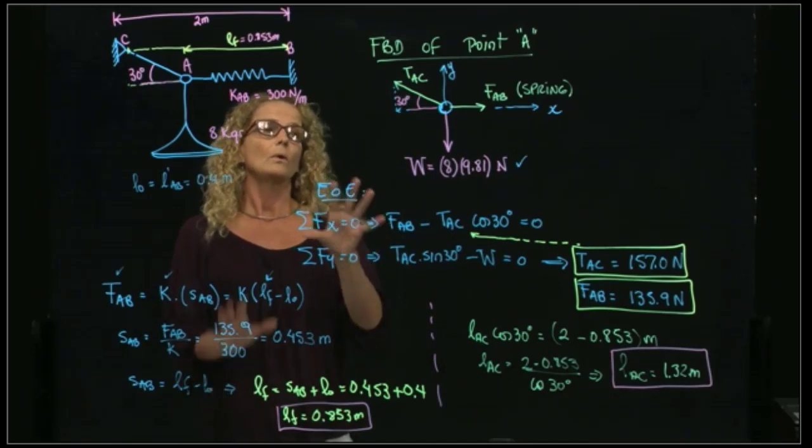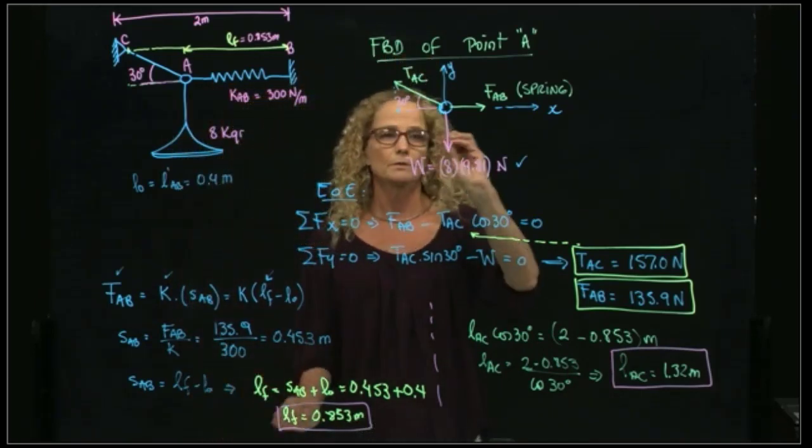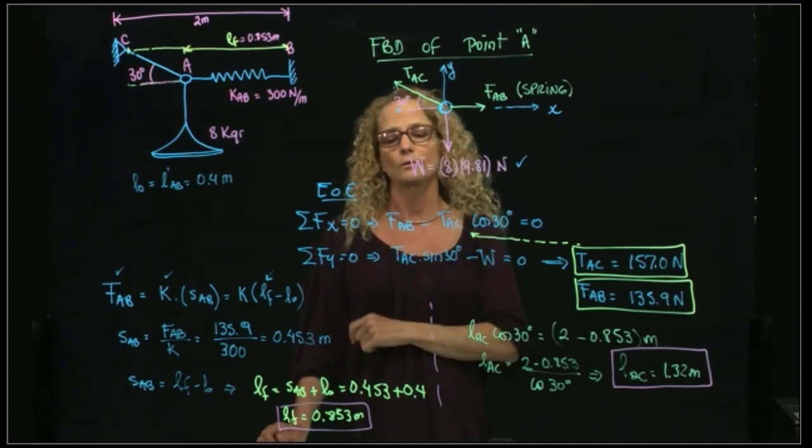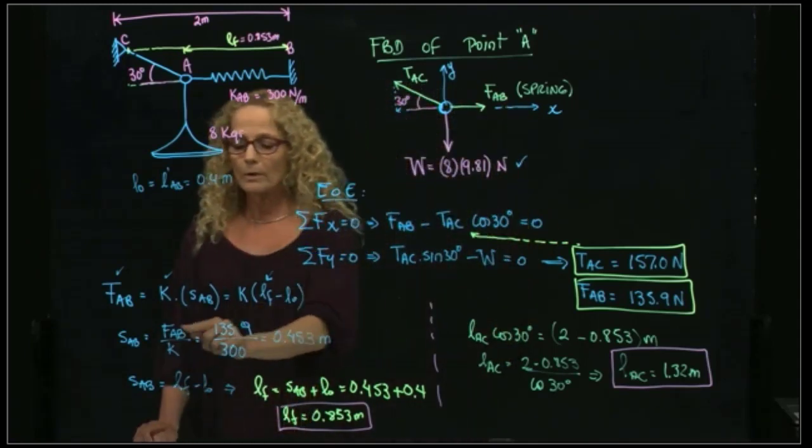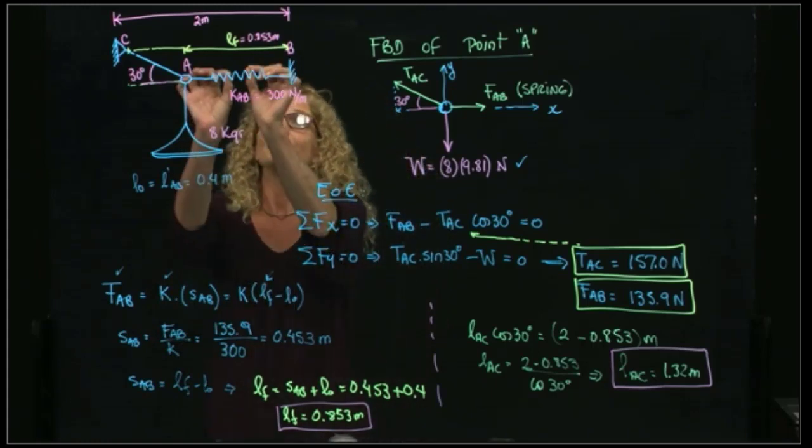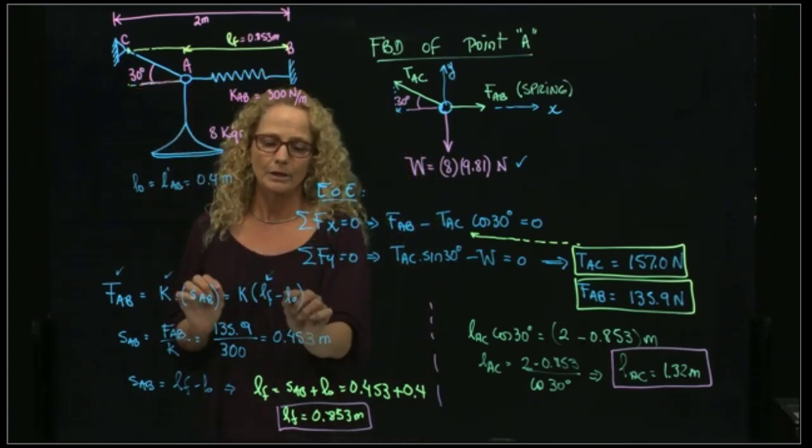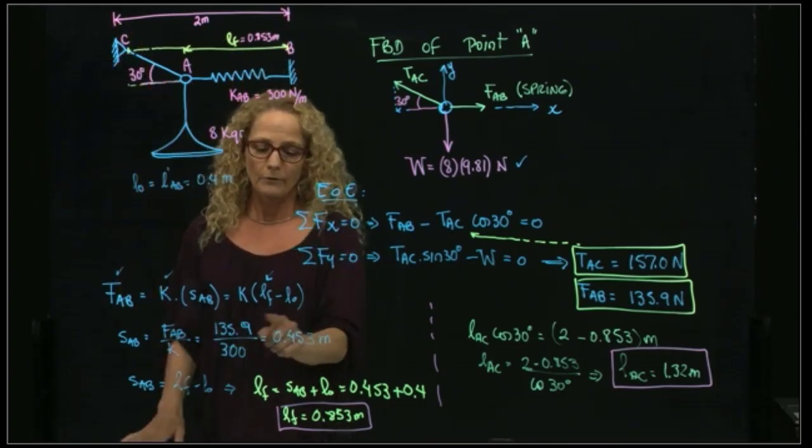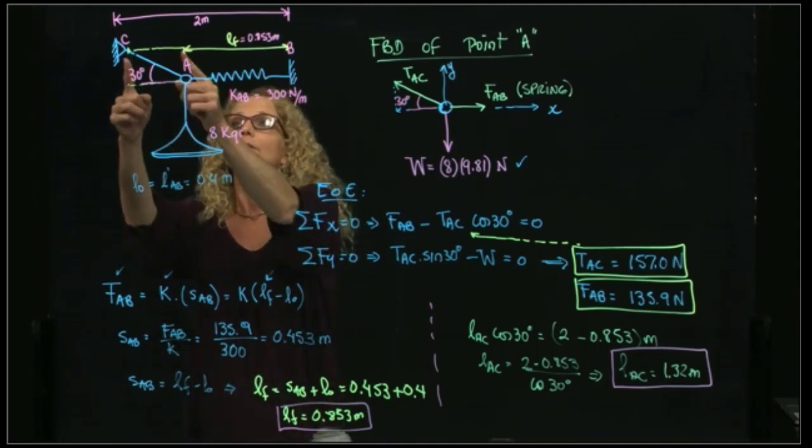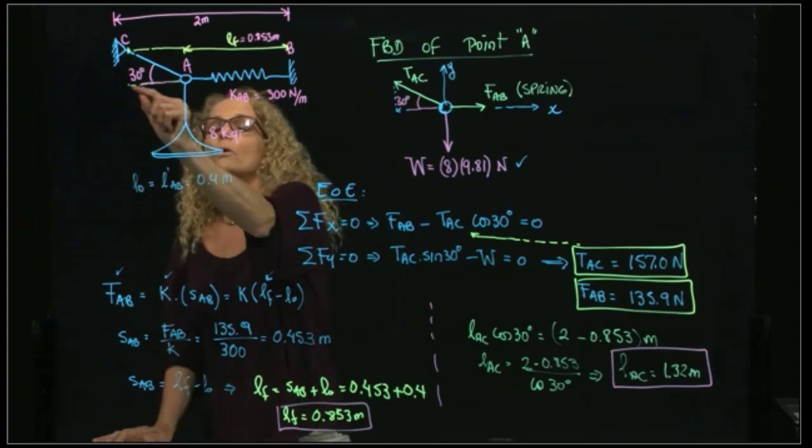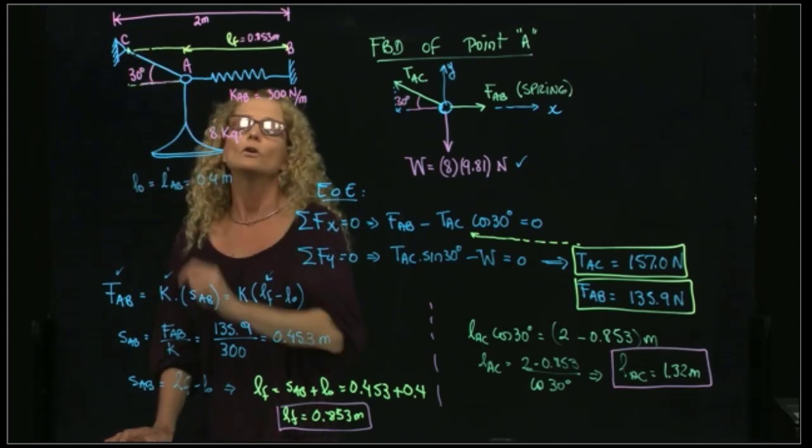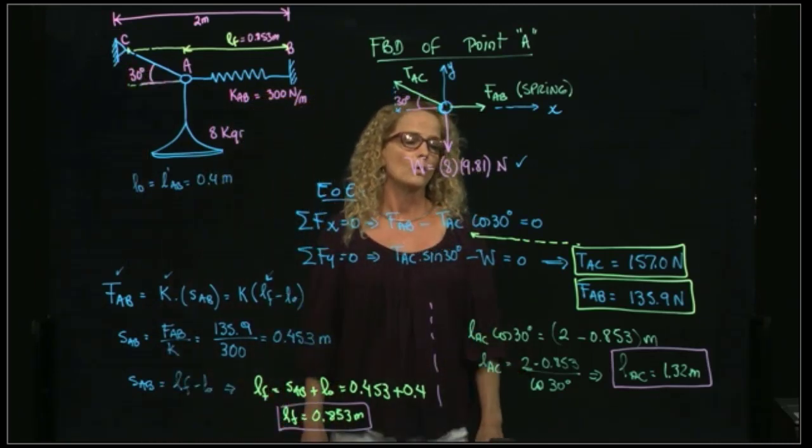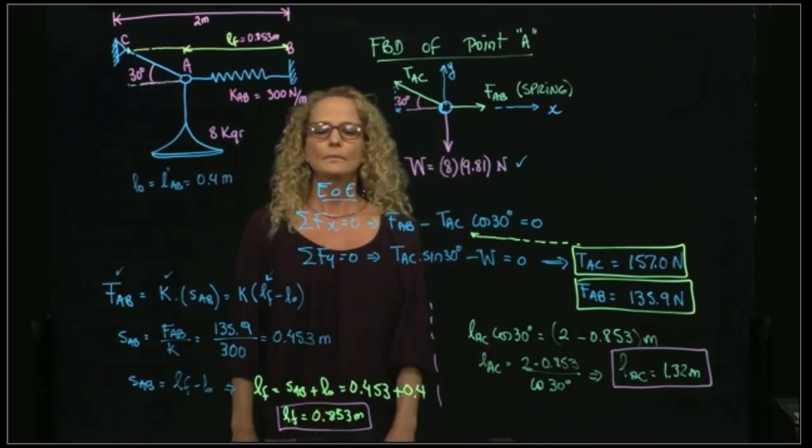OK, so just to recall: What did we do first? We did a free body diagram. It's always the first step. We did the equations of equilibrium and we were able to find the force of the spring and the tension of the rope. With the force of the spring, we were able to find the difference between the final length and the initial length. But since we care about the final length in order to compare that to the 2 meters, we found the final length of the spring, found this distance, and with this distance, which is the component in X direction of this tension of this rope, we were able to find the length of that rope, and this is the solution of this problem.